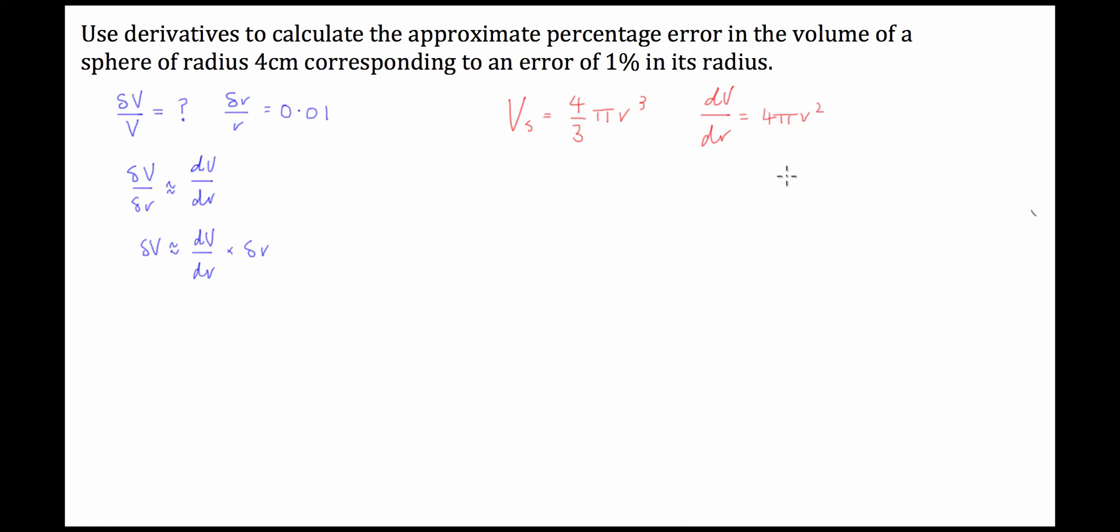So what we have to do is I'm going to substitute this function into our approximation formula. So we're going to have delta v is equal to dv dr which is 4 pi r squared times by delta r.